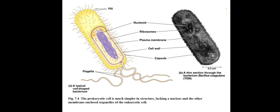Bacterial cells have different structures: the cell wall, pili and flagella for movement, the nucleoid or naked DNA — they don't have any true nucleus — and the plasma membrane with the outer cell wall. Next, we will discuss the difference between eukaryotes and prokaryotes.